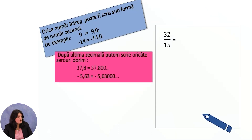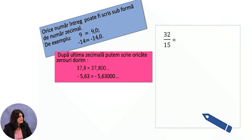Any integer can be written as a decimal number. For example, 9 is 9 and 0 tenths, and minus 14 is minus 14 and 0 tenths. After the last decimal place we can write as many zeros as we wish.